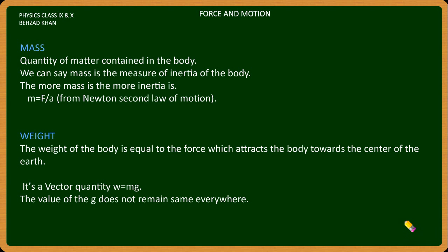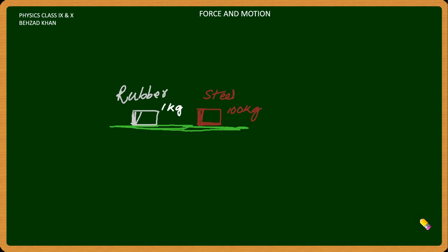Let's try to understand this example. Here we have two boxes that are the same size. One is rubber and one is steel, but the mass is different. The volume is the same, but the mass is different. One is rubber and the steel is 100 kg.